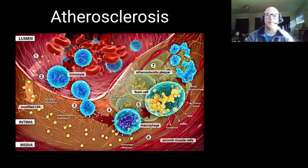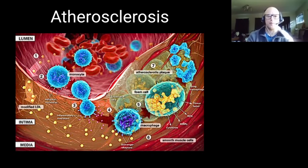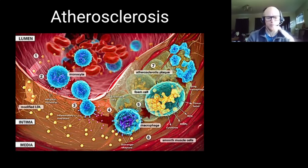Those white cells then turn into things called foam cells, which you'll see at number five in the diagram, and that's where the plaque starts to develop. The whole area is invaded by new scar tissue to encapsulate and encase the problem so it doesn't become a systemic problem — that's why your body is doing it. You get this runaway situation where you get this huge development of scar tissue that forms a bulge, blocks off the artery, and then you get the blood clots and all the problems mentioned previously.